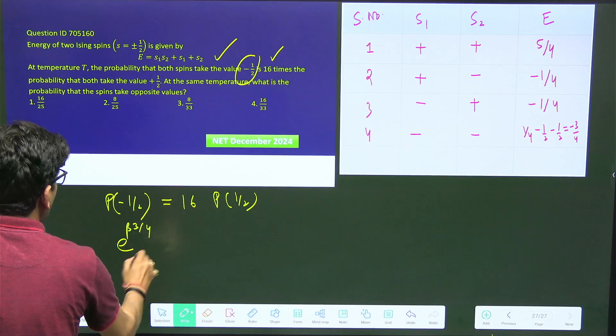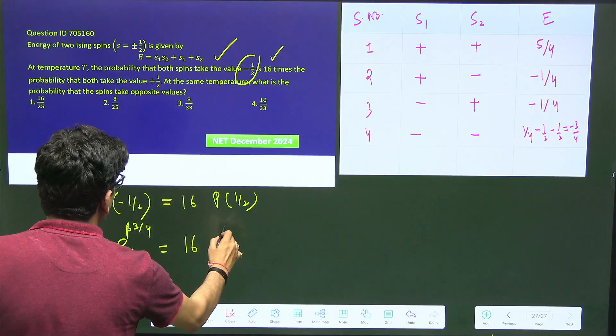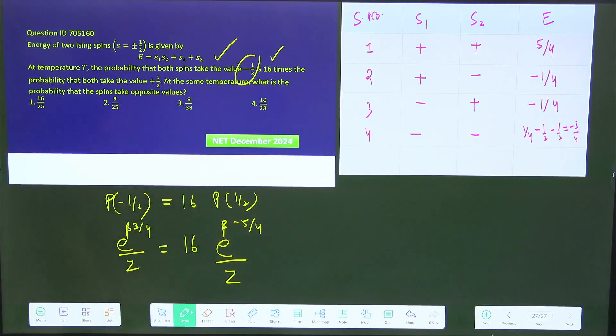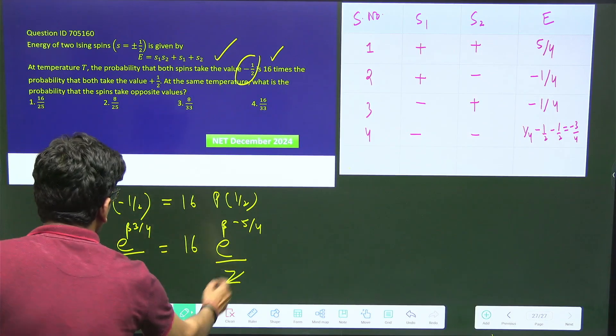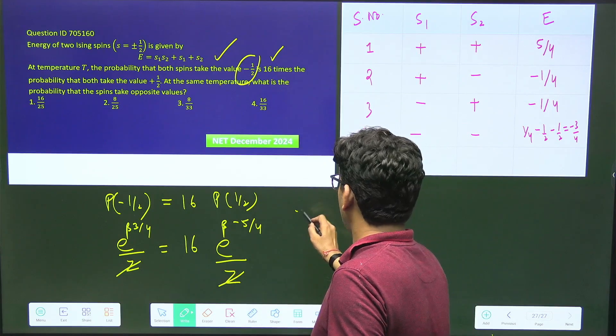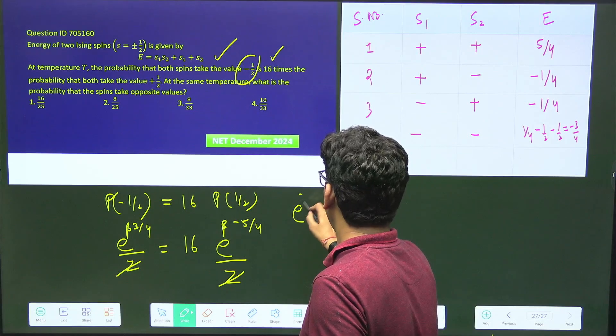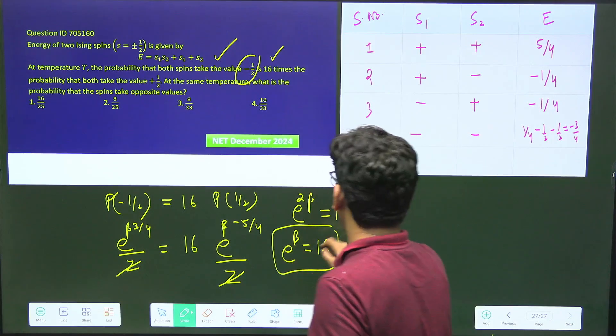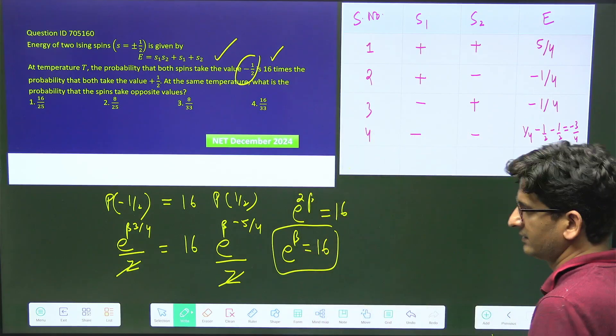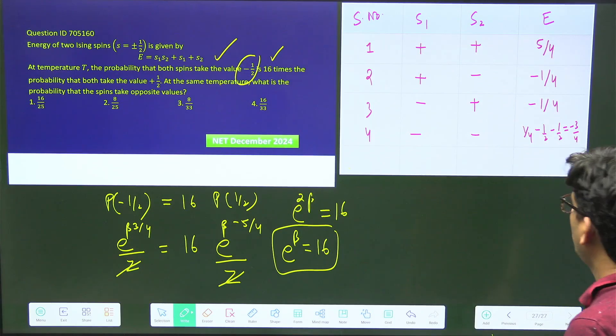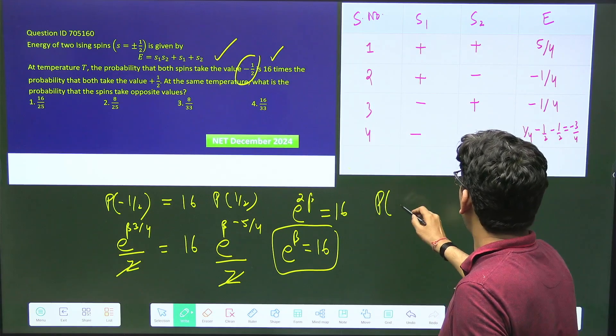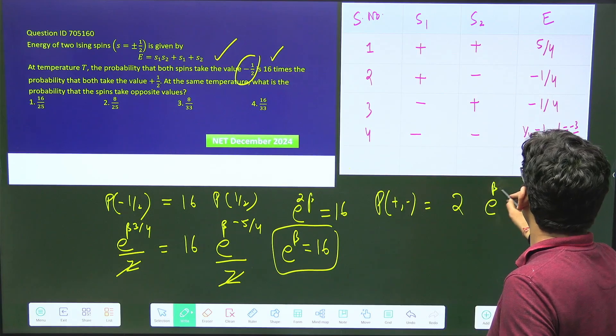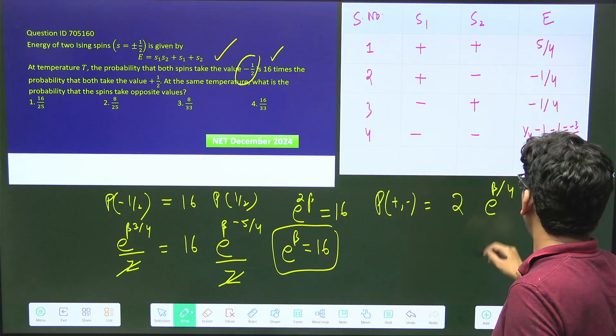Now just apply the constraint that is given - the probability of minus half is 16 times the probability of half. So probability of minus half, that means both spins are down: e to the power beta 3 by 4 divided by Z equals 16 times e to the power beta times...